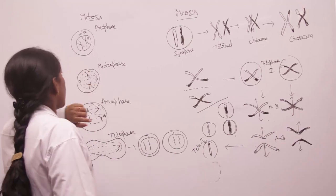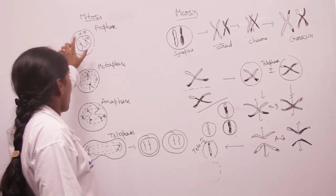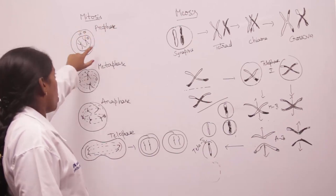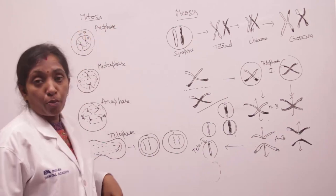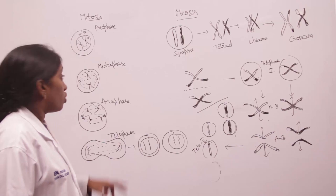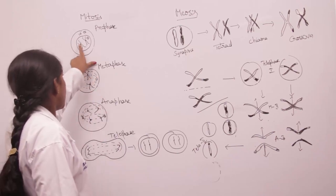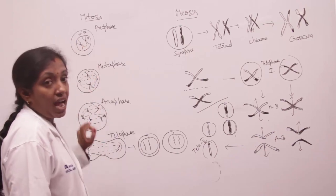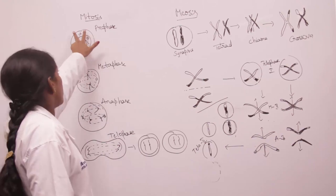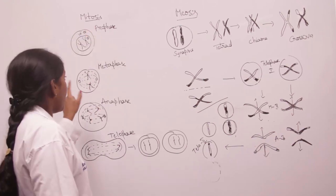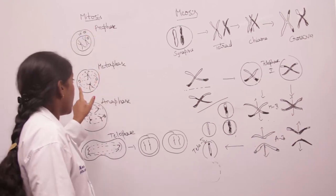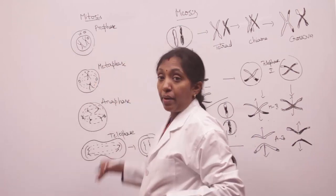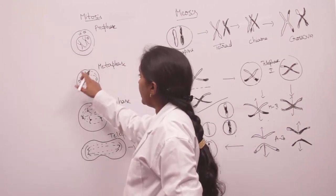Coming to the prophase, the centrioles are reaching the opposite poles and the chromosomes are divided into two sister chromatids. At the centromere, the chromosomes divide into two sister chromatids and the centrioles appear here.